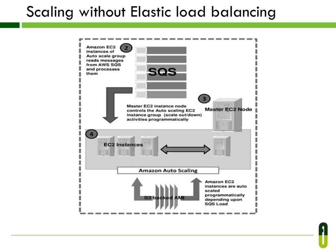These are the steps for AWS Autoscaling without Elastic Load Balancing. Step 1 — reference autoscaling architecture in AWS not using AWS CLB. Step 2 — messages needed for processing are put into AWS SQS using message producer clients. Step 3 — the master Amazon EC2 instance node controls the scale up and scale down of the processing nodes using AWS Autoscaling programmatically. Step 4 — autoscaled Amazon EC2 instance processing nodes pick up messages from Amazon SQS.